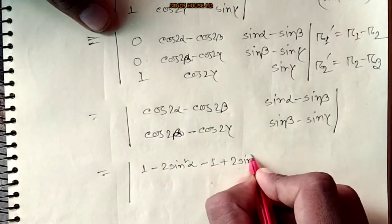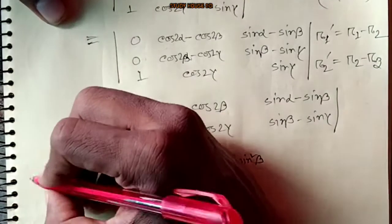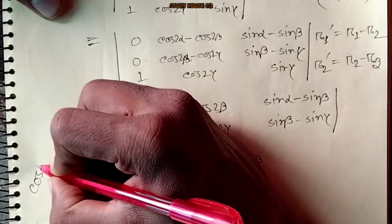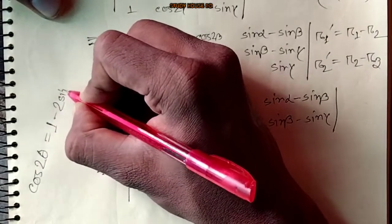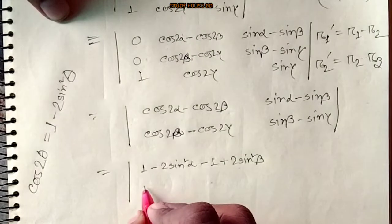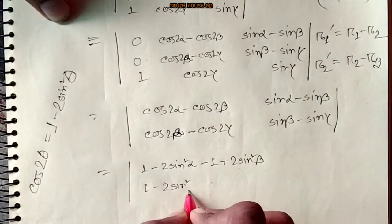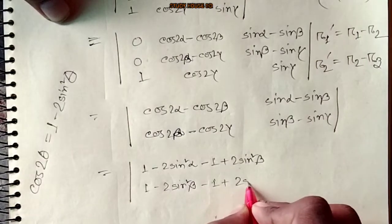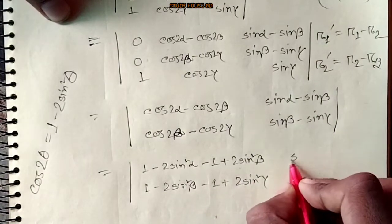cos2α minus cos2β minus 1 minus sin β minus sin α minus 2sin²β. The identity is that cos2θ equals 1 minus 2sin²θ. We have 1 minus 2sin²θ.